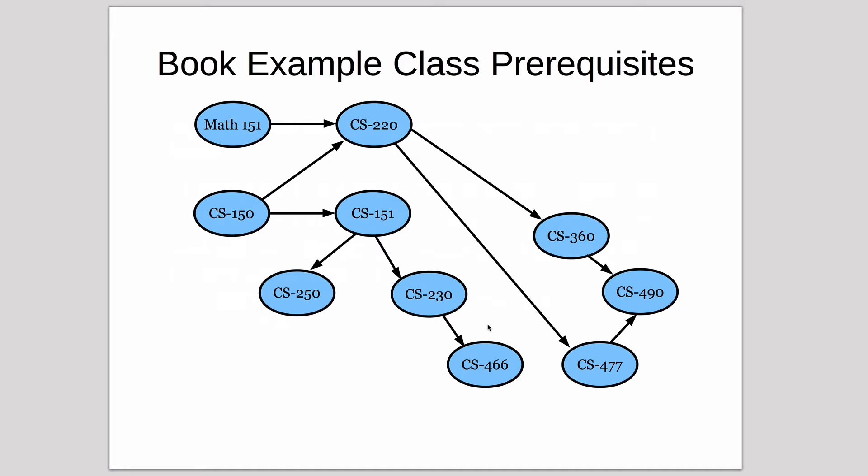Here's an example from the book where you have a set of classes at the university of the author. These are the prerequisites, a graph of the prerequisites. Some graphs have arrows that are called directed graphs or digraphs. You have to take Math 151 before you can start CS 220, and once you've taken CS 220 as a prerequisite, you can take any of these classes. This is a map of prerequisites.